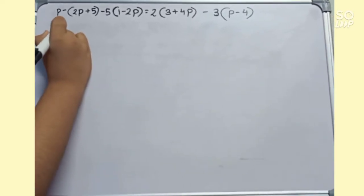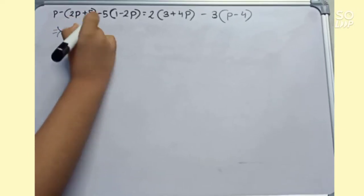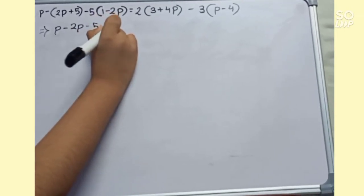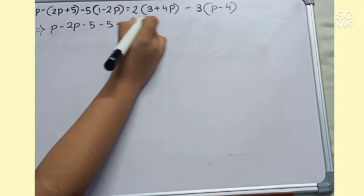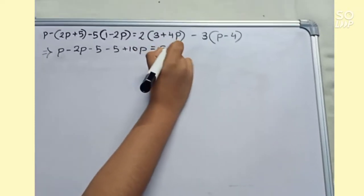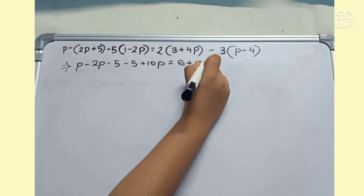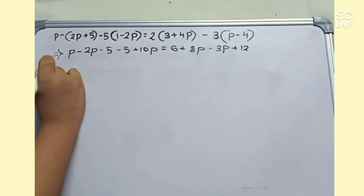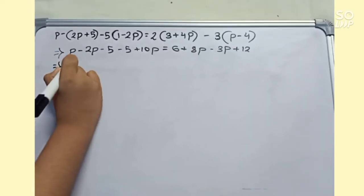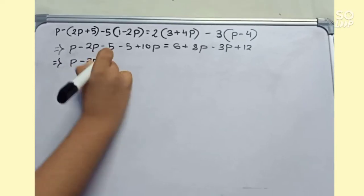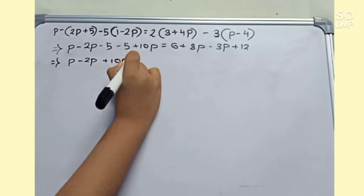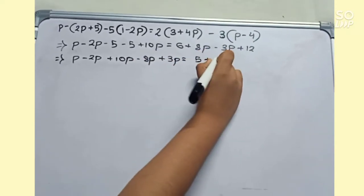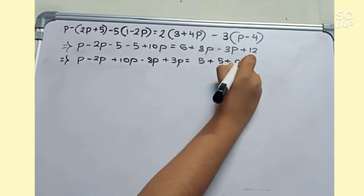Let's start. We will open the brackets: P minus 2P minus 10P plus 8P minus 3P plus 12. Collecting terms on each side: minus 2P plus 10P minus 8P plus 3P equals 5 plus 5 plus 6 plus 12.